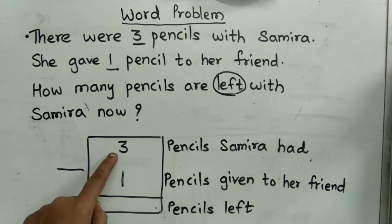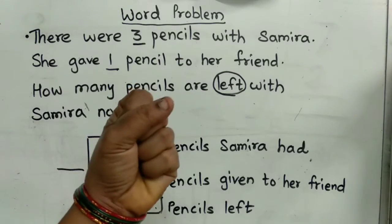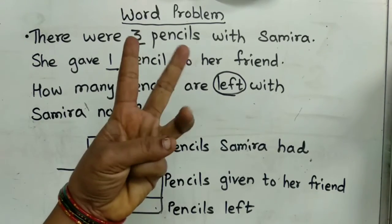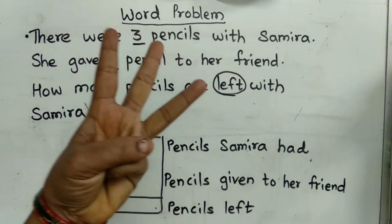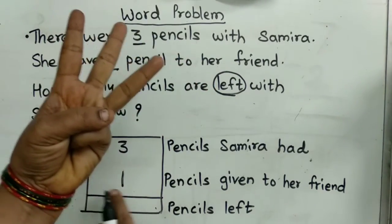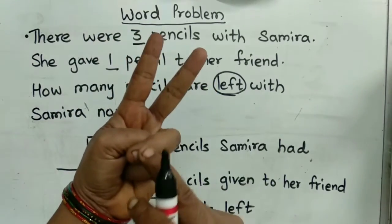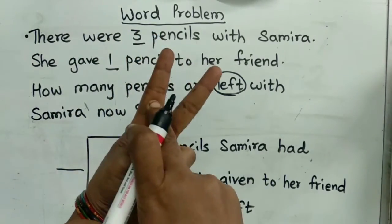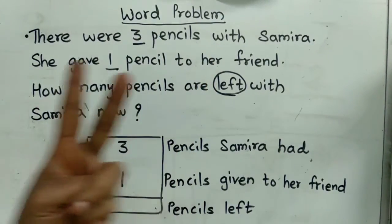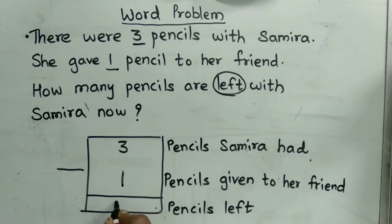Now, three. Take three fingers — one, two, three. Minus one — one finger cut. How many left? One, two. Two. So how many left? Two pencils left.